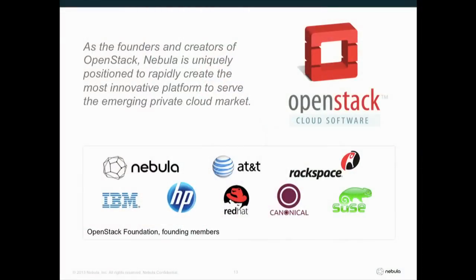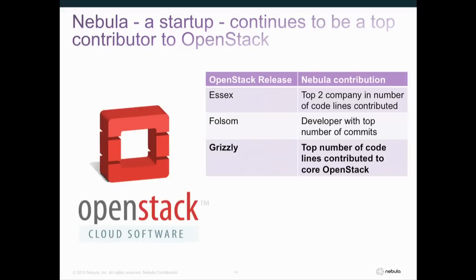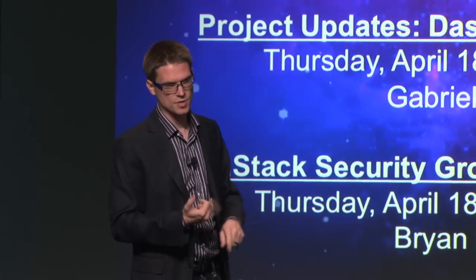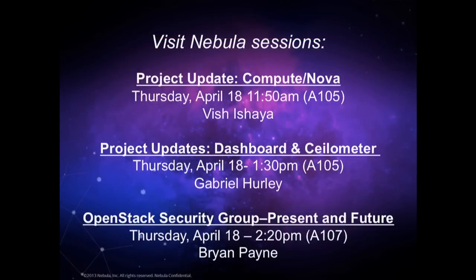Nebula is one of the founding platinum members of the OpenStack Foundation. A bunch of the folks at Nebula actually wrote Nova, which was the compute core. We have been and will continue to be very involved in every OpenStack release — we've been among the top contributors of each release. In the Grizzly release which just shipped, we had the top number of lines contributed to core OpenStack projects of any company — 157,000 lines of code. We've been leading sessions on Compute Nova, the dashboard, Ceilometer, and security. We worked with the NSA on a lot of the security patches that went into the Grizzly release.